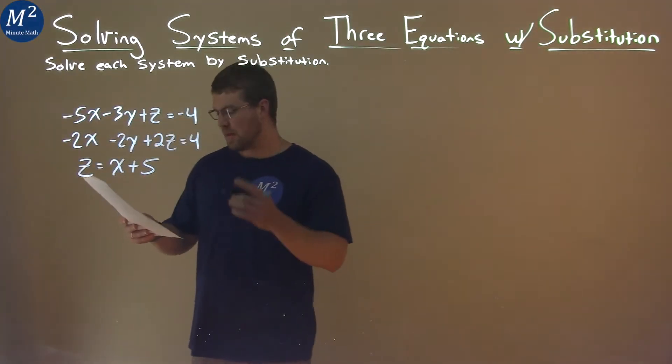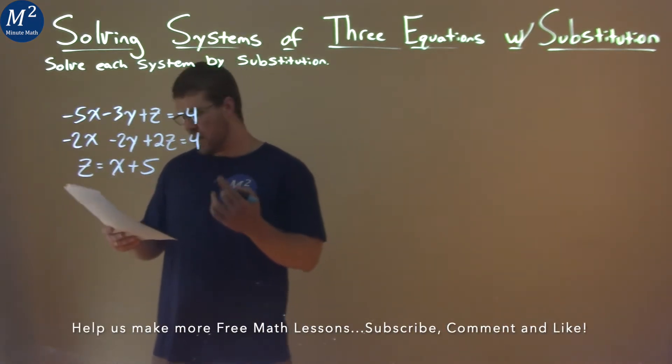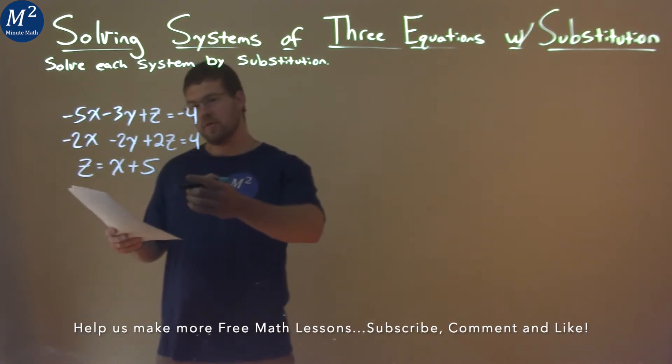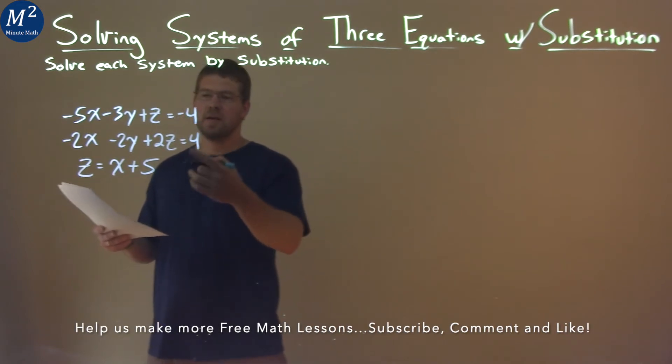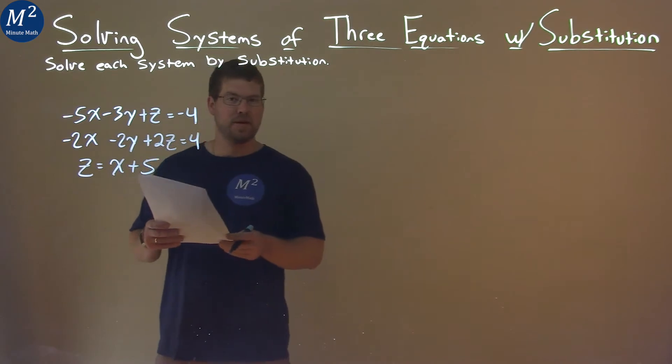We're given this problem right here: negative 5x minus 3y plus z equals negative 4. Negative 2x minus 2y plus 2z equals 4, and z equals x plus 5. And we need to solve the system by substitution.